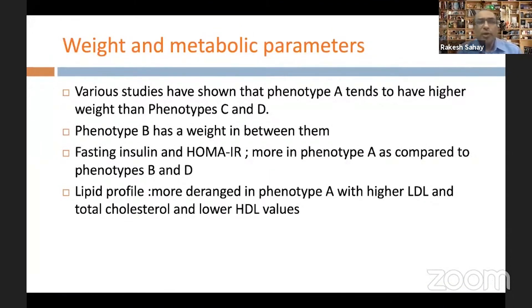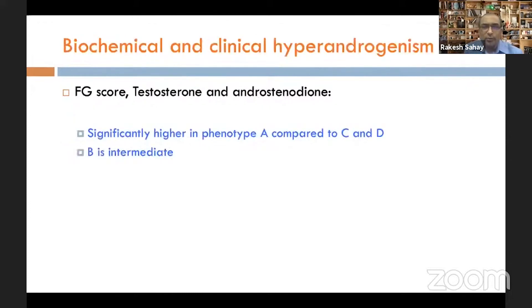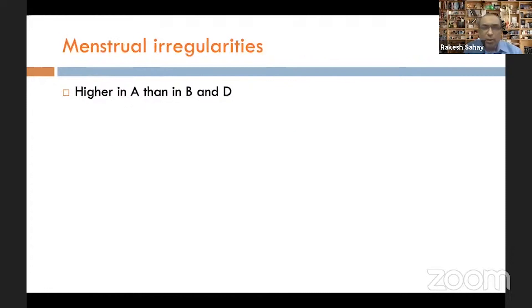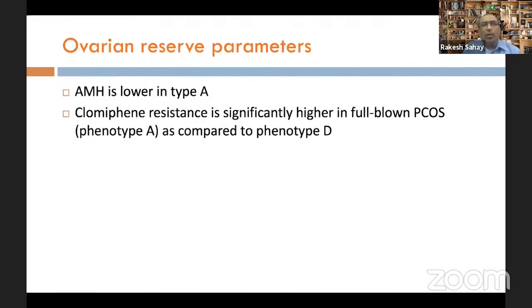Various studies show phenotype A tends to have higher weight than phenotypes C and D, with phenotype B in between. Fasting insulin and HOMA-IR are higher in phenotype A compared to phenotypes B and D. Lipid profiles are most deranged in phenotype A — higher LDL and total cholesterol, lower HDL. FG scores, testosterone, and androstenedione levels are significantly higher in phenotype A, with phenotype B intermediate, and the menstrual irregularity rate is also higher in A than in B and D.